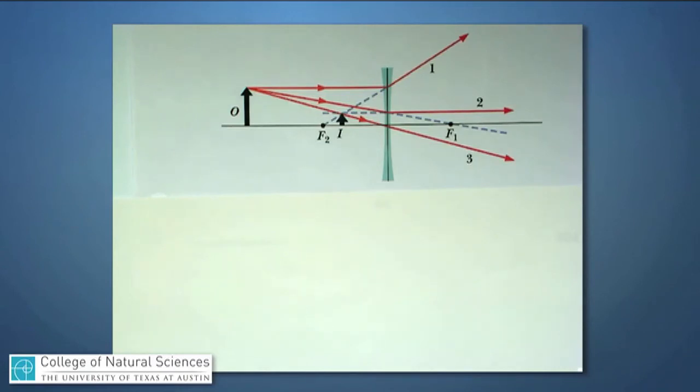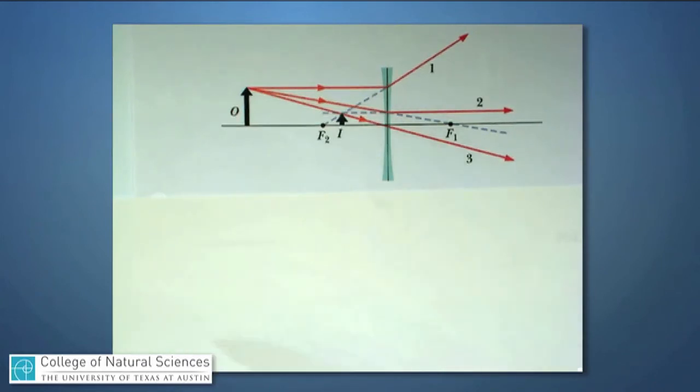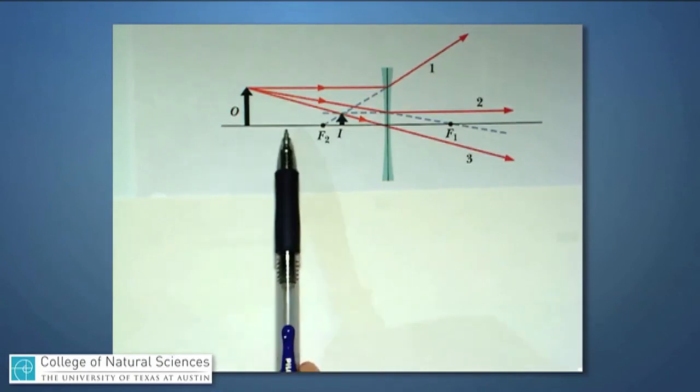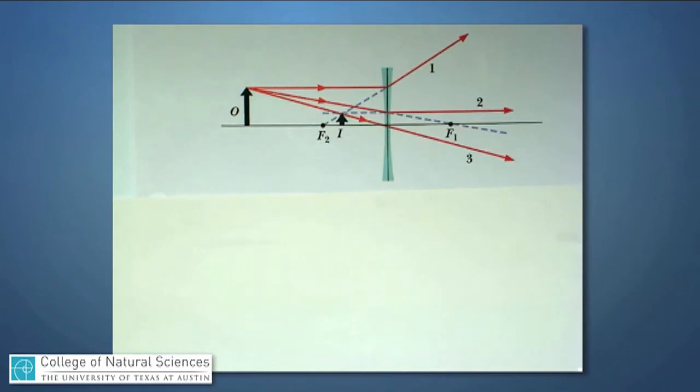It turns out every image from a concave lens is a virtual image, and its particular magnification, its size relative to the original object may change a little bit if I move this in or out, but it doesn't change that it's always going to be a virtual image.